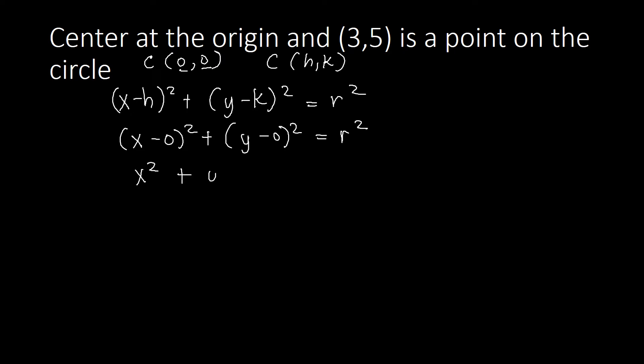This simplifies to x squared plus y squared equals r squared. We don't have the radius given, so we find it by plugging in the point on the circle, which is (3, 5). So x is 3 and y is 5, giving us 3 squared plus 5 squared equals r squared, which is 9 plus 25 equals r squared.